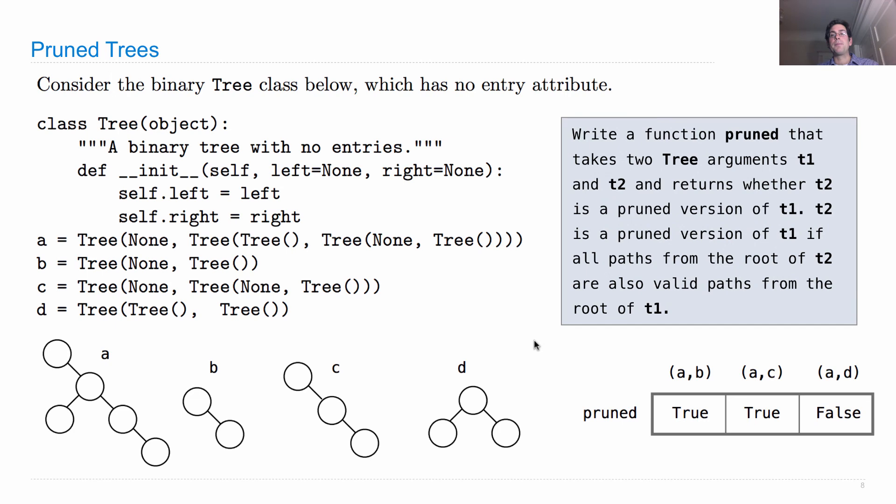Then we ask the following question. Write a function pruned that takes two tree arguments, T1 and T2, and returns whether T2 is a pruned version of T1. T2 is a pruned version of T1 if all paths from the root of T2 are also valid paths from the root of T1.